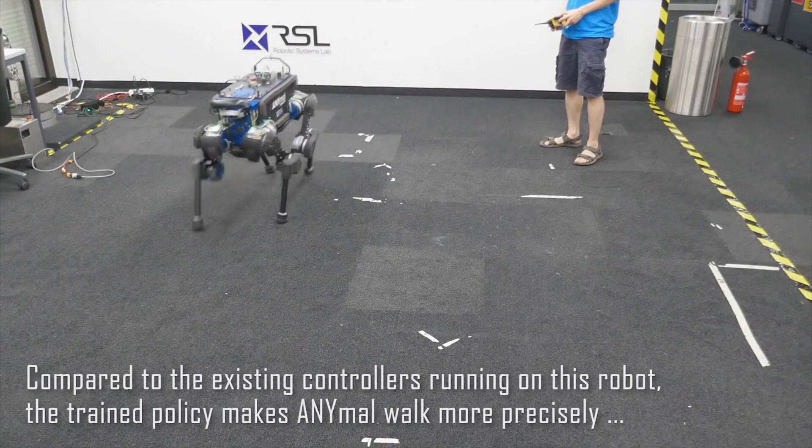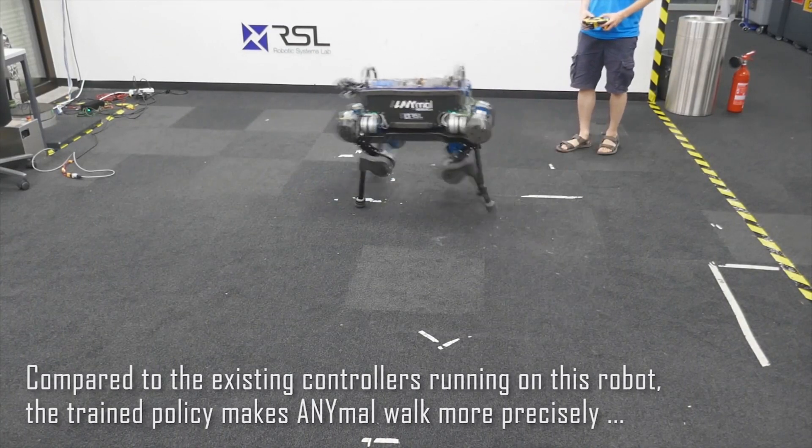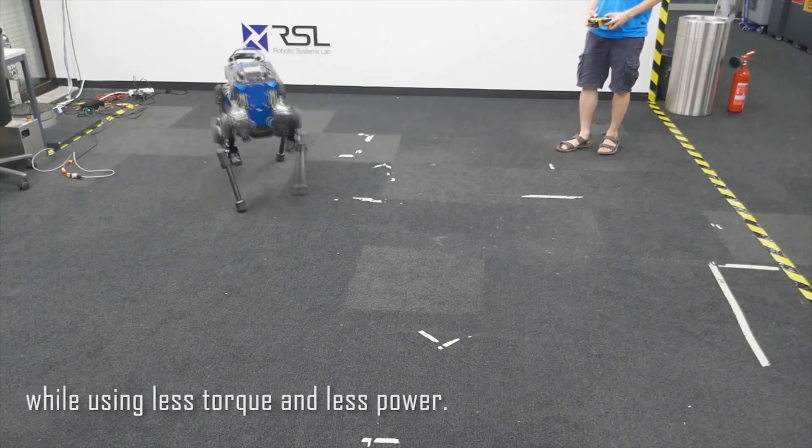Compared to the existing controllers running on this robot, the trained policy makes ANYmal walk more precisely, while using less torque and less power.